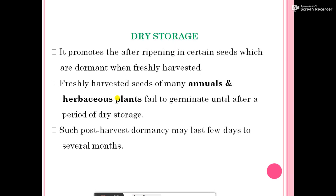Dry storage promotes after-ripening in certain seeds which are dormant when freshly harvested — for example, papaya seeds. Freshly harvested seeds of many annuals and herbaceous plants fail to germinate until after a period of dry storage. Such post-harvest dormancy may last from a few days to several months.